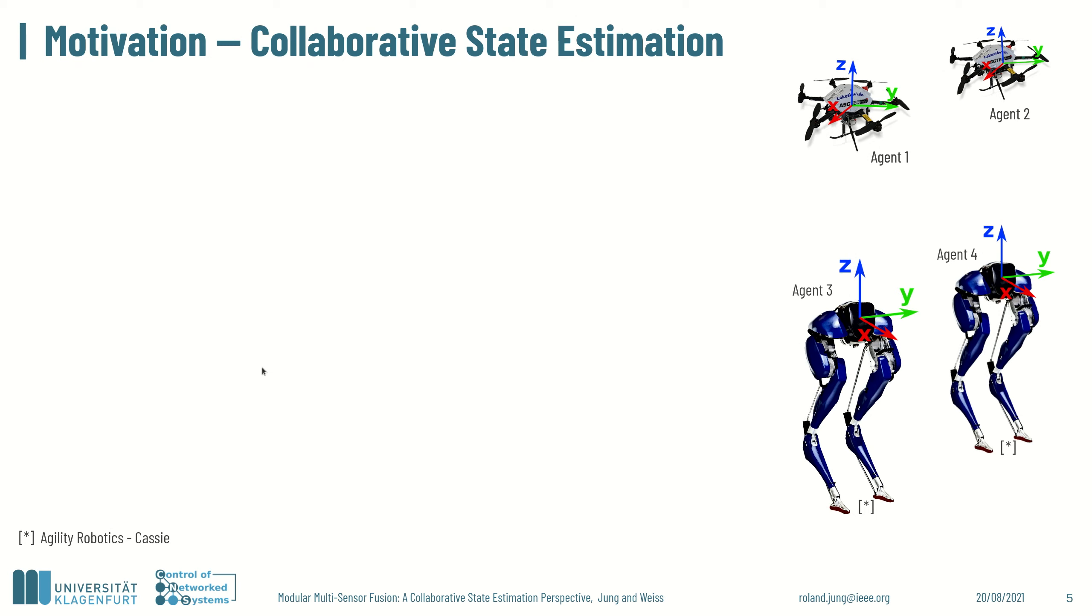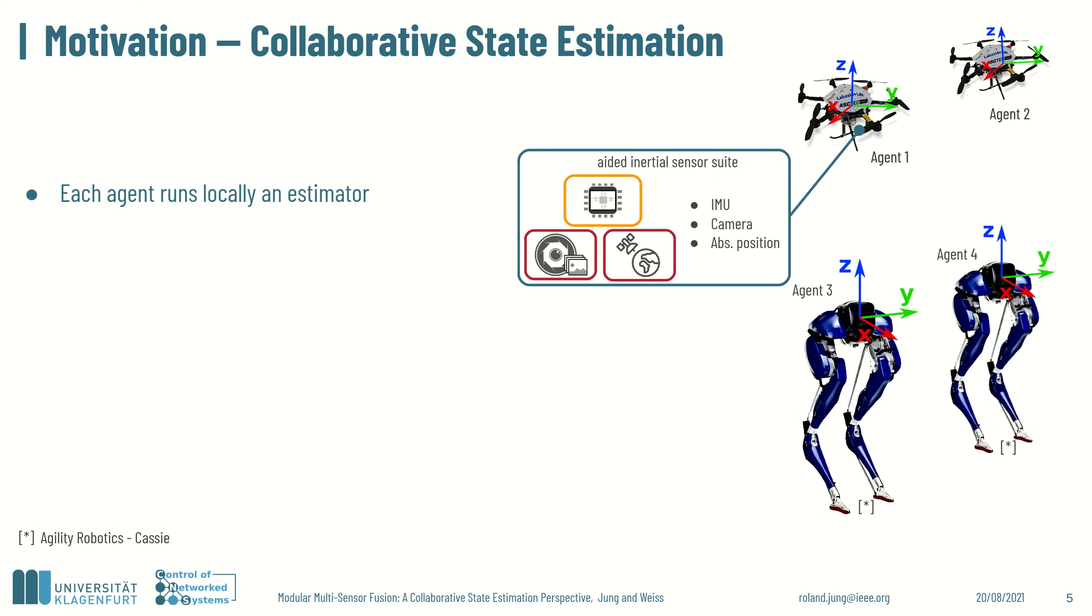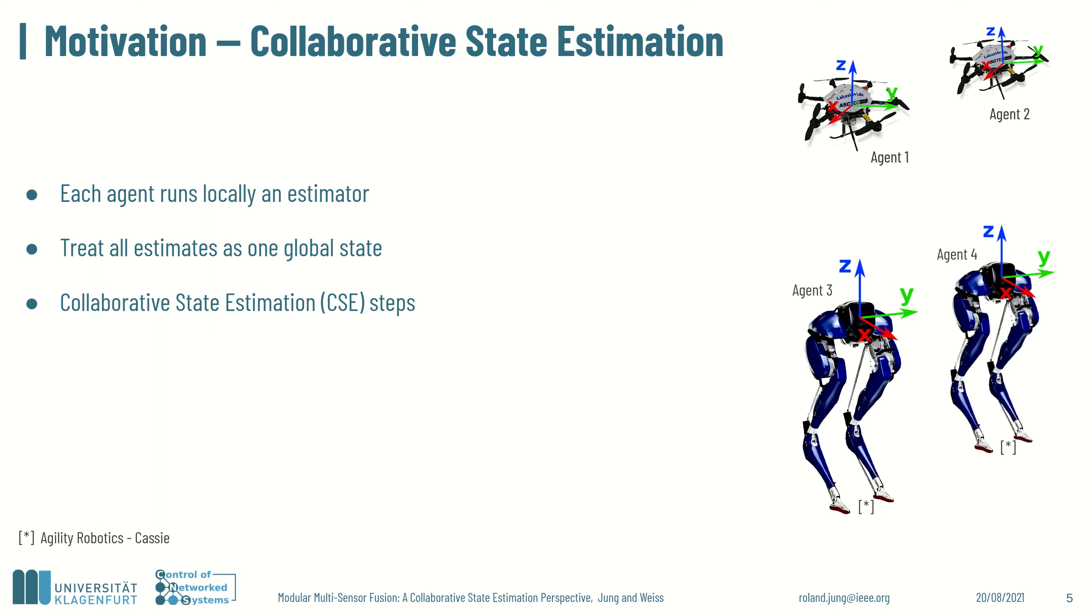The primary motivation to formulate the new modular multi-sensor fusion approach stems from our previous publication, where we have introduced new decoupling schemes. Typically, each agent runs locally recursive filters that propagate states by proprioceptive sensors and corrects them by exteroceptive ones. Collaborative state estimation aims to treat all estimates as one global state and to fuse information provided by different sensors from all agents in a statistically optimal fashion. Three filter steps were identified, which are represented in different colors throughout the presentation.